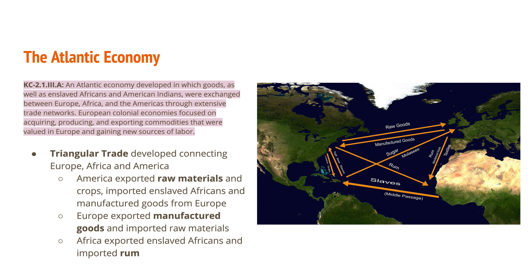The first key concept is 2.1, Roman numeral 3, letter A. An Atlantic economy developed in which goods as well as enslaved Africans and American Indians were exchanged between Europe, Africa, and the Americas through extensive trade networks. European colonial economies focused on acquiring, producing, and exporting commodities that were valued in Europe and gaining new sources of labor.